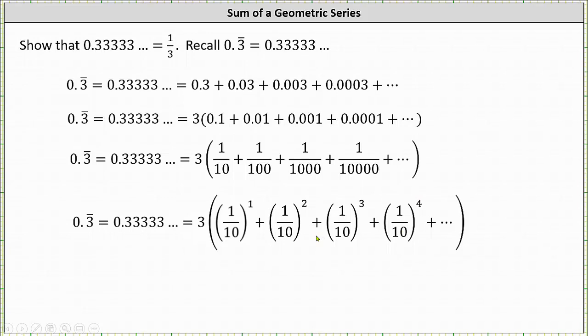We can write the right side using sigma notation, where we have the sum from k equals one to infinity of three times 1 tenth raised to the power of k.